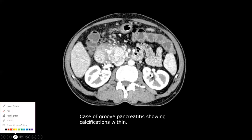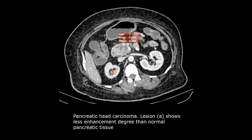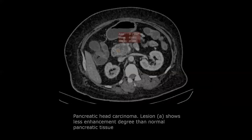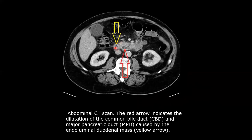This is an axial CT scan showing a case of chronic pancreatitis with calcifications noted within it. This is an axial contrast-enhanced CT scan showing pancreatic head carcinoma; the carcinoma is enhancing less compared to normal pancreas. This case of pancreatic head carcinoma on portal phase shows a dilated main pancreatic duct.